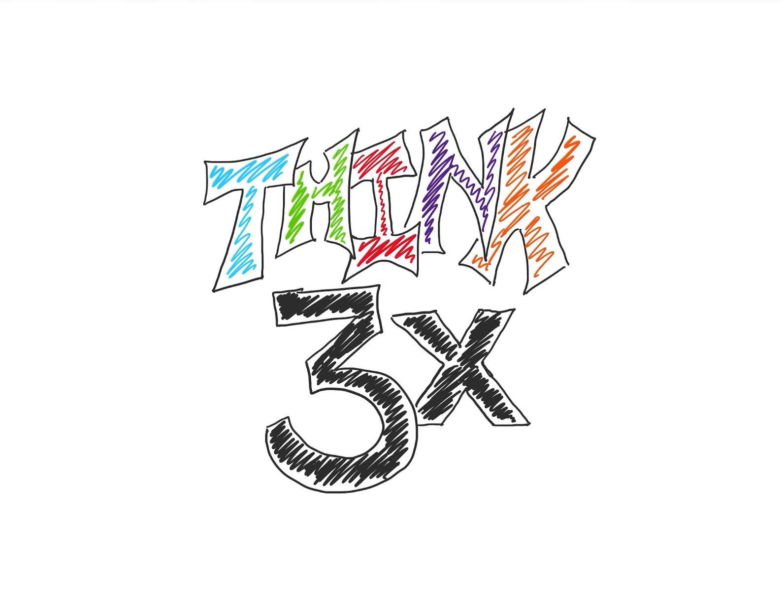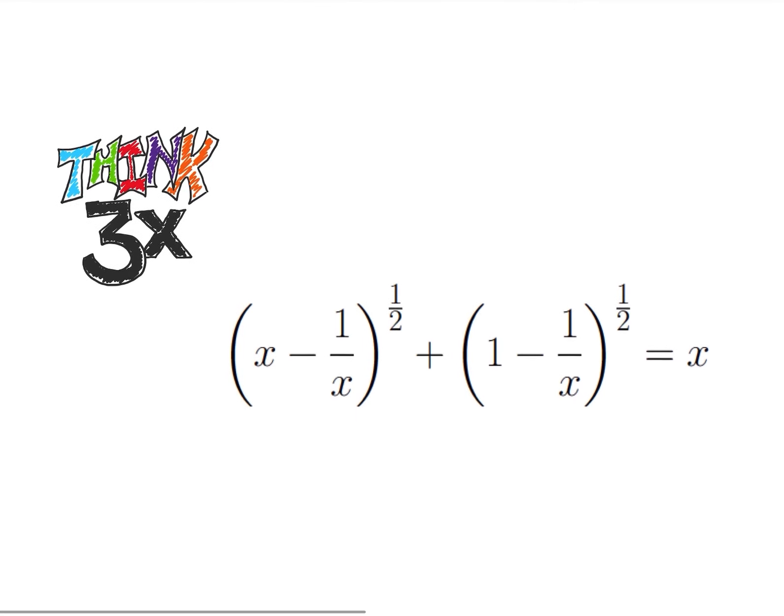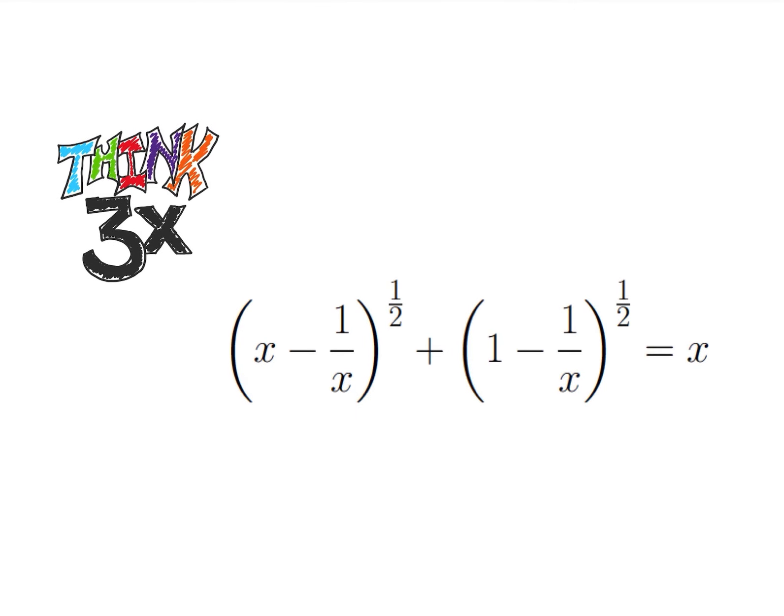Welcome back to Think Thrice Problem Solving. Today we're going to be solving a really fun algebra problem. So let's take a look at it. We have x minus 1 over x square root plus 1 minus 1 over x square root is equal to x.